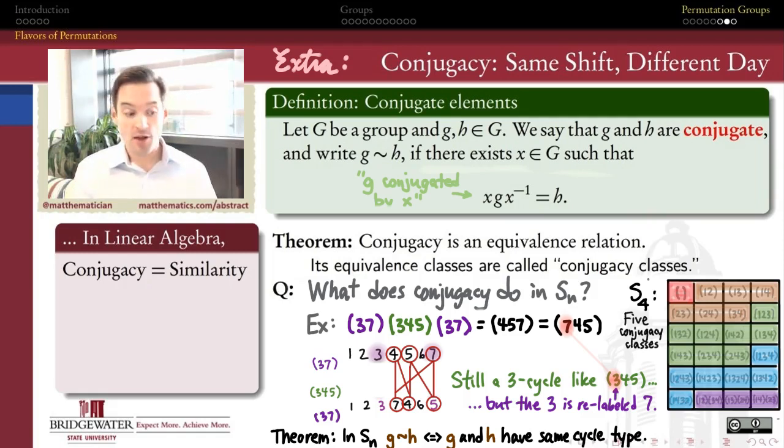And studying the conjugacy classes of a group is a really powerful way of understanding the structure of that group really intimately. Because two groups that are the same are going to have the same number of conjugacy classes. And within each conjugacy class, they're going to have the same number of elements inside of that conjugacy class. Conjugacy classes are also a super powerful way to study representations of finite groups, as it turns out. Which is a topic that we're going to come back to one more time in our last video, where we talk about Cayley's theorem.